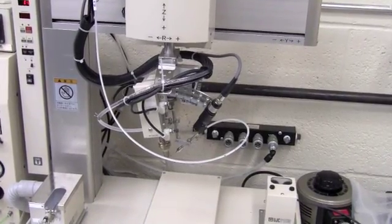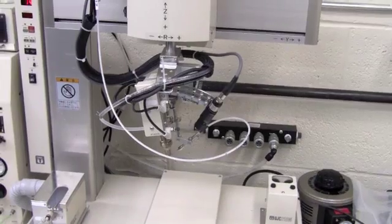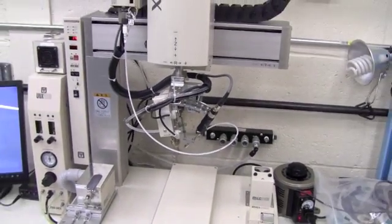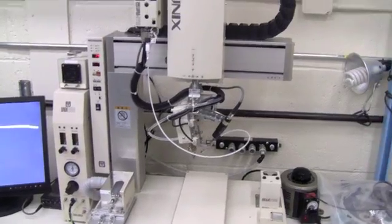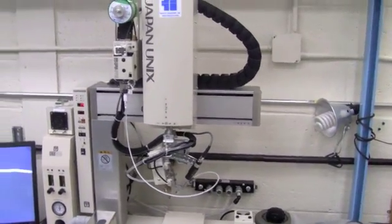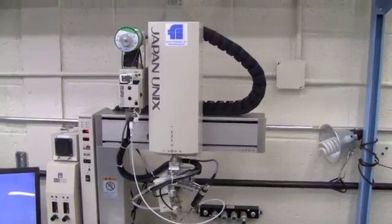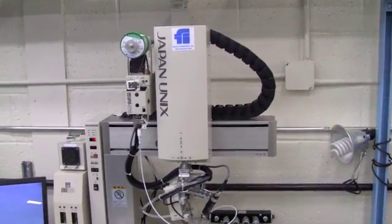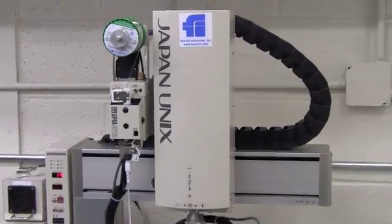We can also provide a bench top enclosure with a light curtain. Alternate robot platforms are available for in-line production that include a Scarra, Cartesian or 6-axis multi-articulated robot.